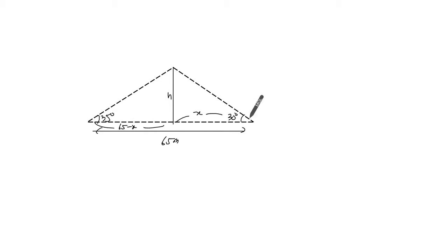So from this triangle, we have h over x is equal to tangent of 30 degrees. Now from this triangle here, we have h over 65 minus x equals tangent of 35.